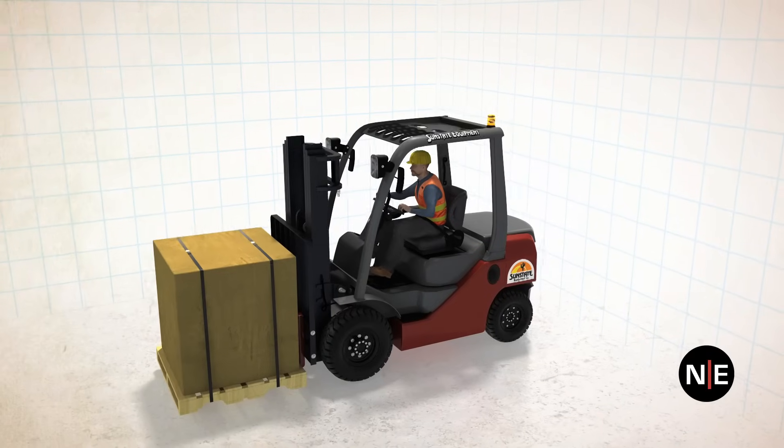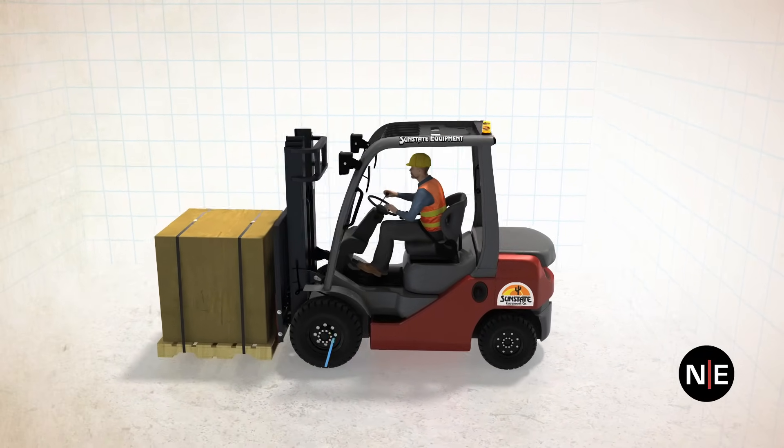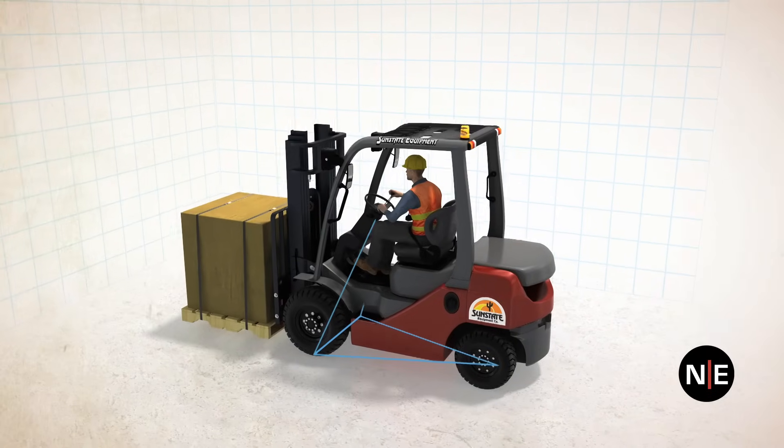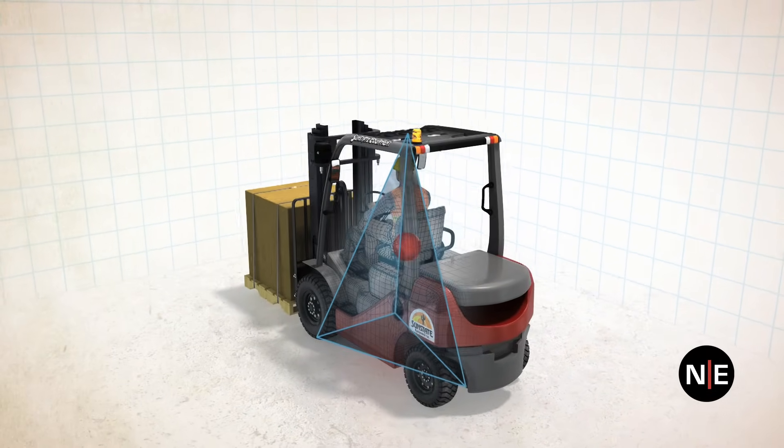The best way to visualize a forklift's stability is to create a stability pyramid. Start with the three points I've just mentioned. The top point of the pyramid is located just above the operator's head, lined up with the top of the mast.